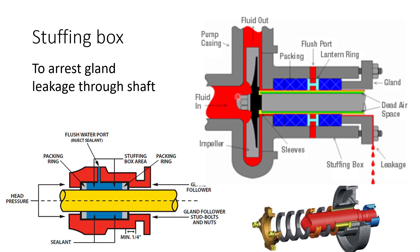Now let us talk about the stuffing box or the seal on the shaft. When the shaft is coming out, there will always be some clearance between the shaft and the body of the pump, and liquid will try to come through. For that reason, we put gland packings. We can also see a lantern ring here, from where the seal flushing fluid comes in and does the sealing of this ring so that it does not get overheated. Through these two nuts, we can adjust the compression of the seals so that leakage is avoided.